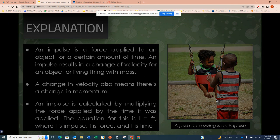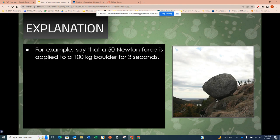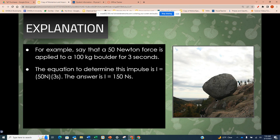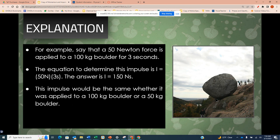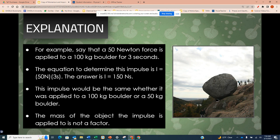The equation is I equals Ft, where I is the impulse, F is the force, and t is the time. For example, say that a 50 Newton force is applied to a 100 kilogram boulder for 3 seconds. The equation to determine this impulse is 50 Newtons times 3 seconds. The answer is impulse equals 150 Newton seconds. The impulse would be the same whether it was applied to a 100 kilogram boulder or a 50 kilogram boulder. The mass of an object the impulse is applied to is not a factor.